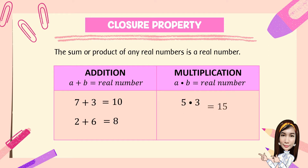For example: 5 times 3 is equal to 15, and 6 times 4 is equal to 24. So here, a and b are considered real numbers, and they are equal to a real number.